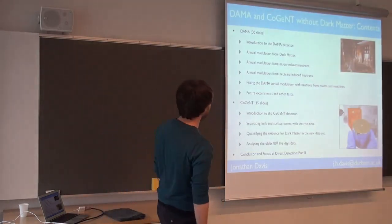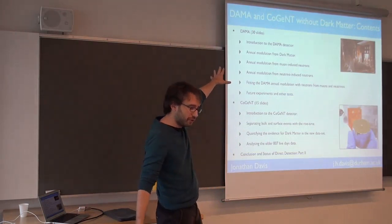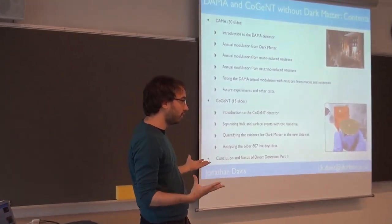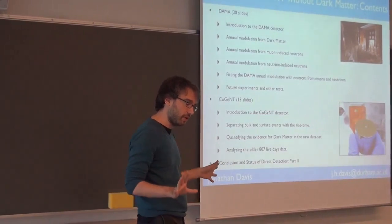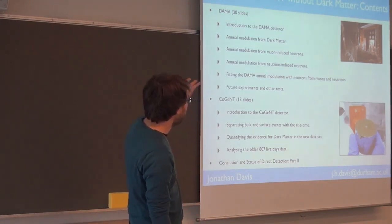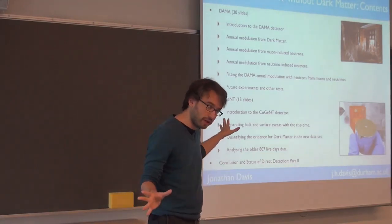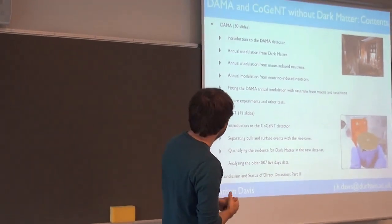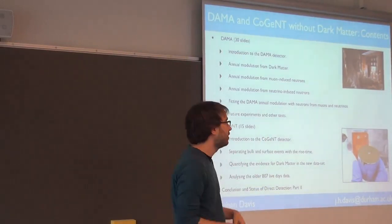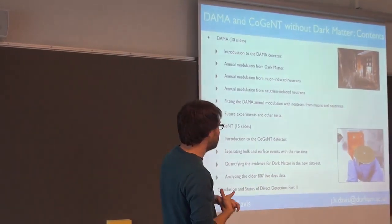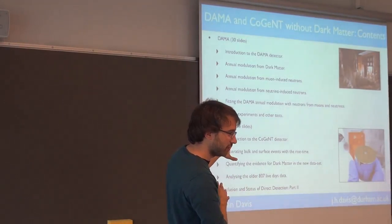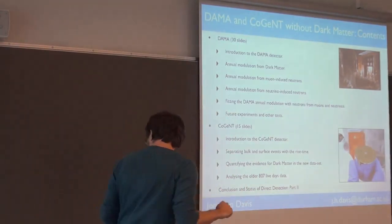So this is the outline of the talk. I'm going to start with DAMA — most of the talk will be about that. I'll introduce the DAMA detector, explain why it's looking for an annual modulation, why you might expect that from dark matter, and why DAMA has such a compelling result. Then I'll explain other sources of annual modulation — muons and neutrinos specifically, and the neutrons that they produce. Then I'll show how you can fit those to give you the right phase in DAMA, and explain how that can predict results of other experiments. Then I'll talk about CoGeNT briefly.